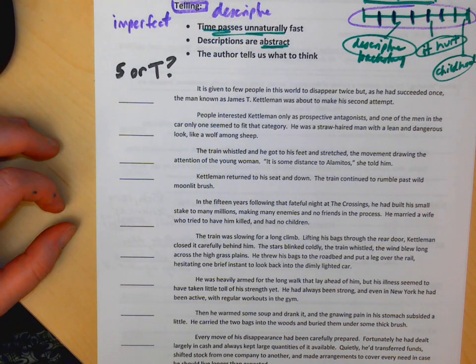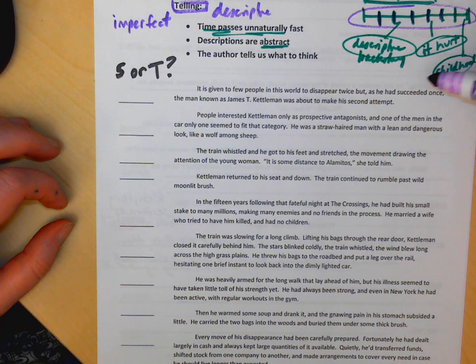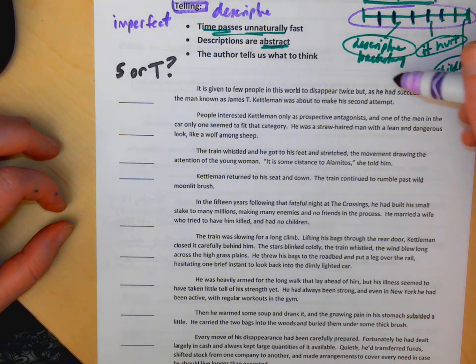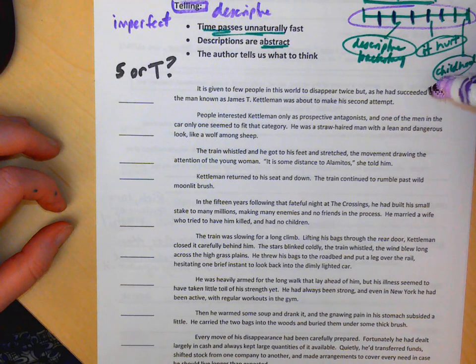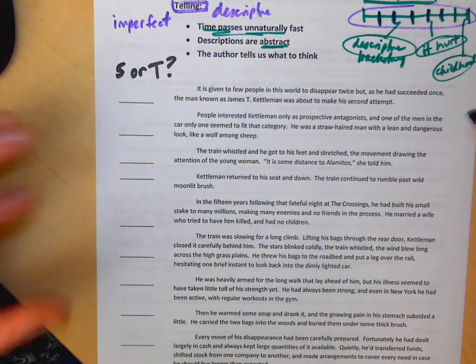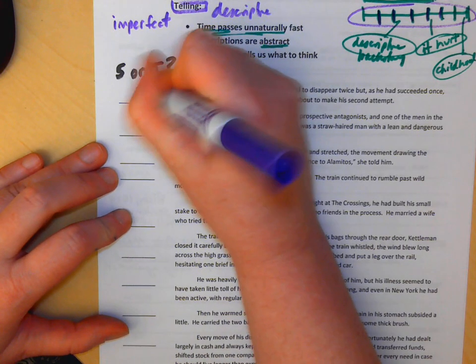Has anything happened yet? You know, did James T. Kettleman get up or make coffee? No. Author's giving us backstory. It's talking about how, oh my gosh, at a time in the past he actually disappeared. And we just get told that. So there we are in telling modality.